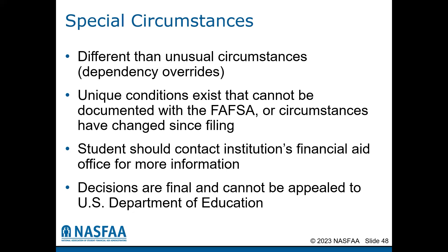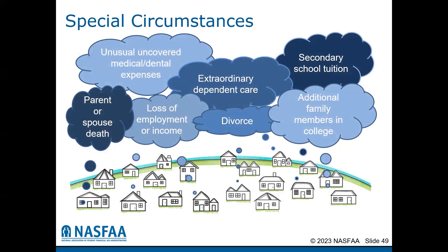The financial aid administrator has the ability to make decisions about the student's situation and make adjustments to the student's FAFSA data as appropriate. Please note that there may be requests for additional documentation to demonstrate the change in the student's circumstances. Decisions made by the financial aid administrator are final and cannot be appealed to the U.S. Department of Education. Examples of special circumstances may include, but are not limited to, unusual medical bills not covered by insurance, unusual dependent care expenses, a parental or spousal death, change in employment status including loss of employment or reduction in wages, and changes in a student's or parent's marital status.